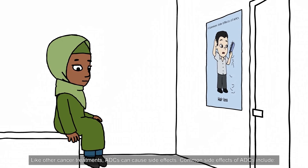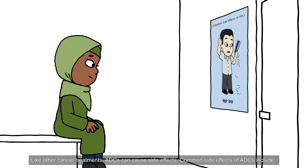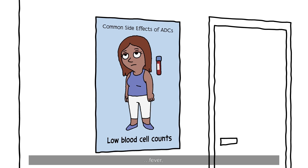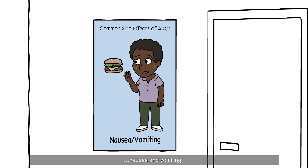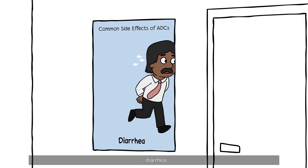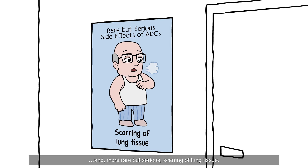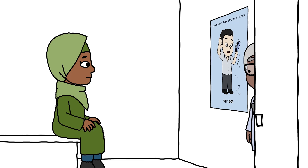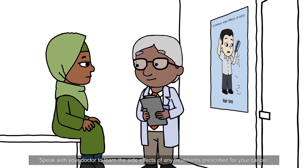Like other cancer treatments, ADCs can cause side effects. Common side effects of ADCs include hair loss, low blood cell counts, fever, inflammation of the lining of the mouth and gut, nausea and vomiting, diarrhea, blurred vision, numbness and nerve damage to the limbs, and more rare but serious scarring of lung tissue. Each ADC has its own side effects. Speak with your doctor to learn the side effects of any treatments prescribed for your cancer.